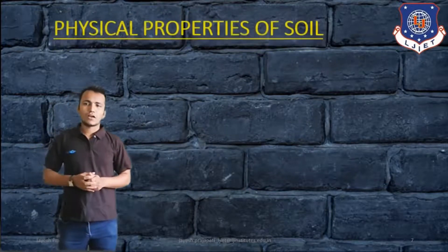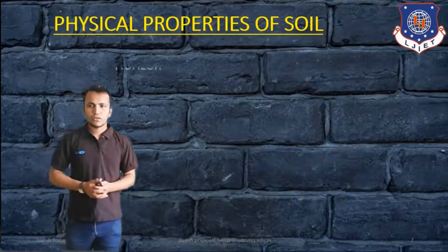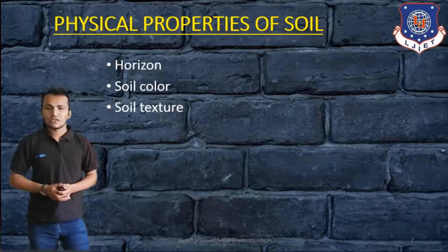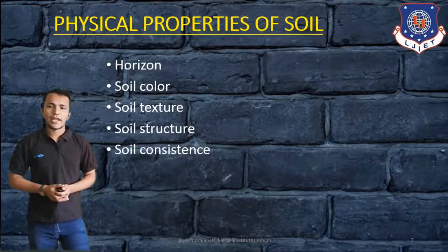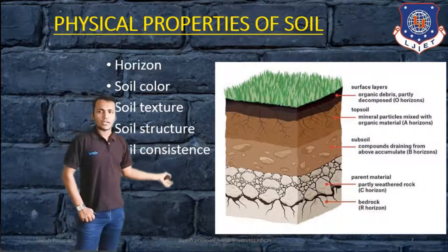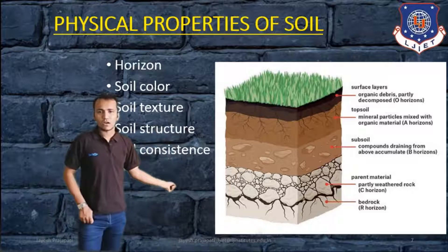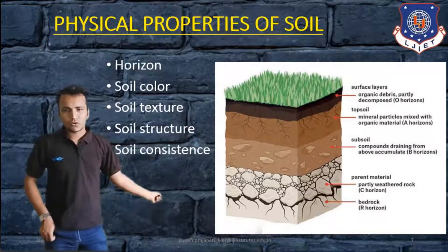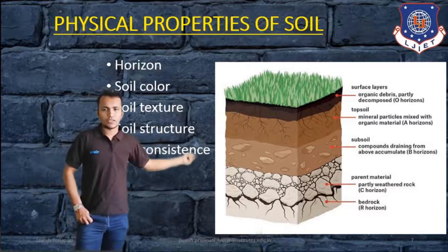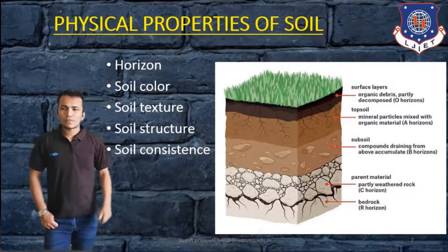First, the physical properties of soil — these are the visible properties. They include horizon, soil color, soil texture, soil structure, and soil consistence. In the figure you can see the physical properties shown by different layers, including the R horizon, C horizon, and other different layers of the soil.